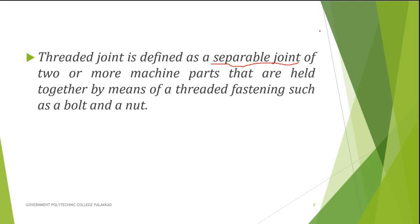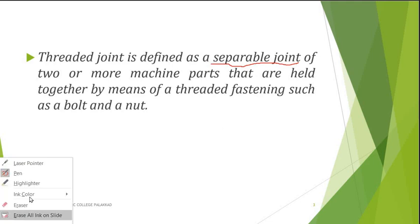A threaded joint is defined as a separable joint of two or more machine parts that are held together by means of a threaded fastening such as a bolt and nut.